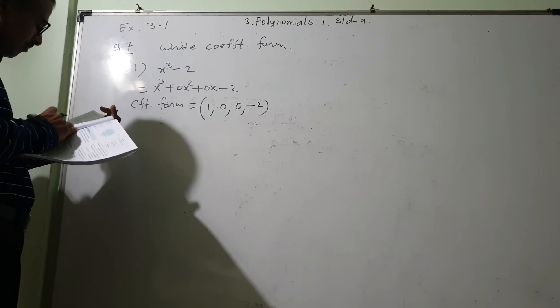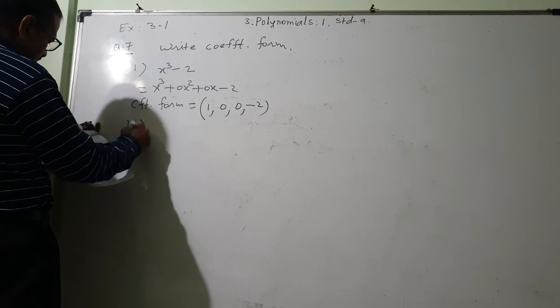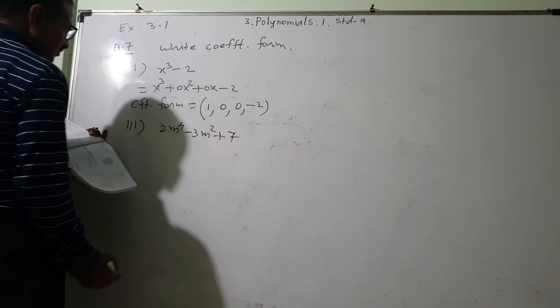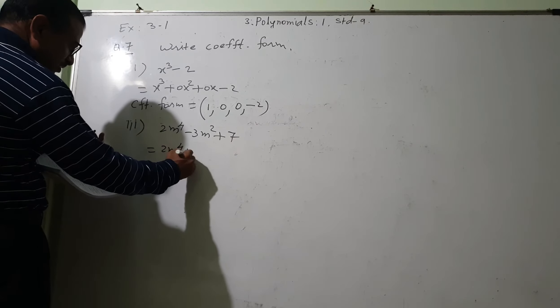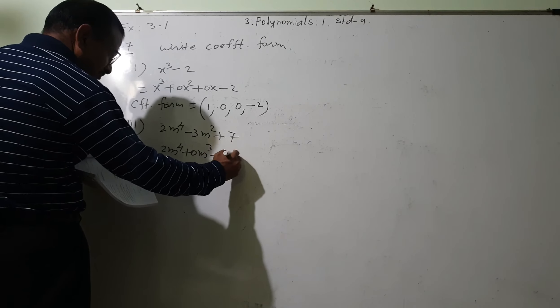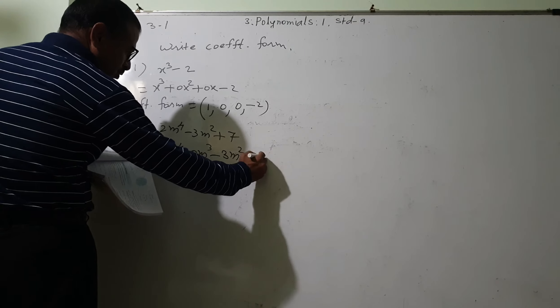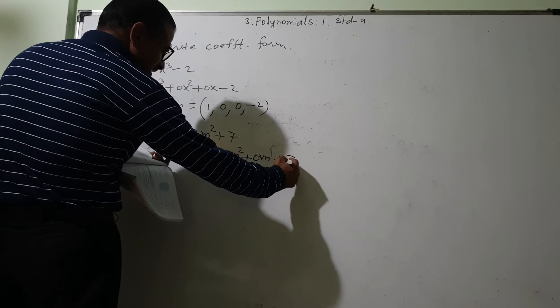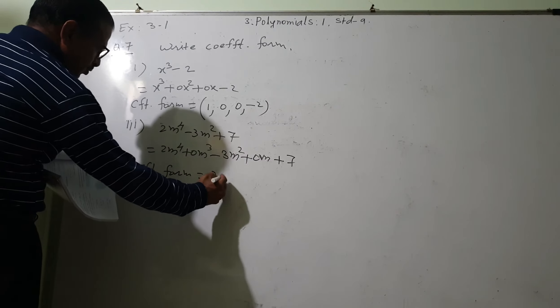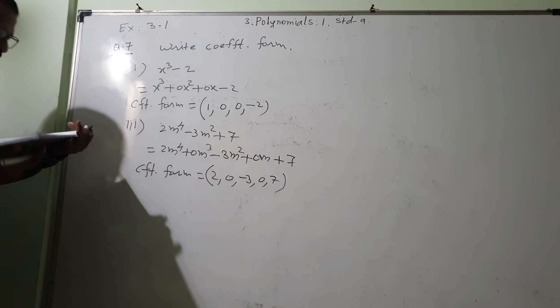So only one question is given or what? Another, third one I will take. 2m raise to 4 minus 3m square plus 7. So this I will write 2m raise to 4 plus 0m raise to 3, because after 4 I want 3. Then 3m square. Now m raised to 1 is not there, I will write 0m raised to 1 and plus the last number is 7. Coefficient form will be 2, 0, minus 3, 0, 7. All these coefficients we are writing, that is known as the coefficient form.